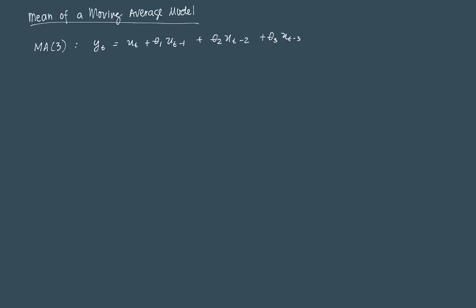Note that, as we said in the last video, in the moving average model, the error terms which comprise the linear combination of what we define as our time series variable Yt, is a white noise process. So it adheres to the properties that the expected value of Ut is 0, and the variance of Ut is equal to sigma squared, which is less than infinity.